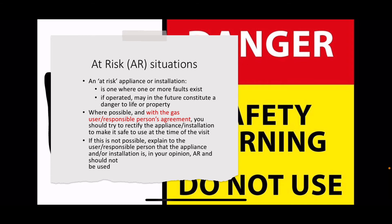Where possible, and with the gas user's permission, you should try to rectify the appliance to make it safe. You say to them: 'This is at risk, can I fix it for you? I advise you it needs fixing.' If they say yes, you fix it. If you can't fix it at the time, explain that the appliance is in your opinion at risk and should not be used. Note: 'should not be used' - not 'must not be used' - that's for at risk.